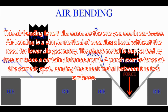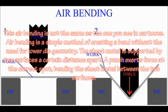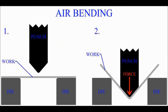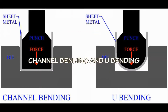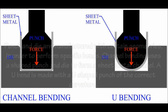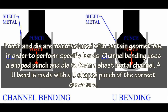Air bending is a simple method of creating a bend without the need for lower die geometry. The sheet metal is supported by two surfaces a certain distance apart. A punch exerts force at the correct spot, bending the sheet metal between the two surfaces.